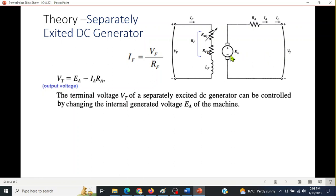So the formula here, we can write that Vt, that is the output voltage, equals the generated voltage minus the drop. Now, if we can control or if we can vary Ea, then we can vary Vt.